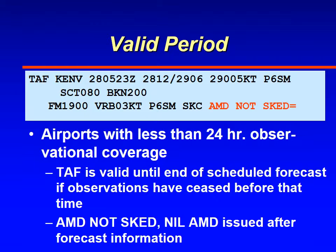Sometimes at airports where there are no observations, meteorologists trying to make a TAF may use other information surrounding the airport — such as other METARs in the area, satellite information, and radar information. But they may not be able to update that forecast since they don't know what's going on at the airport if the ASOS or AWOS machine is not reporting. So you'll sometimes see in the remarks or at the end of the TAF that amendments are not scheduled, or 'nil amendment,' meaning they can't amend the forecast.